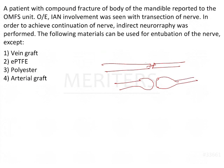In most cases of neurography, a tube is placed which forms a barrier, helping prevent the spread of nervous tissue — as seen in traumatic neuroma — and maintaining continuity of the nerve. Among the four options given, the materials are: vein graft, EPTFE (extended polytetrafluoroethylene), and polyester.